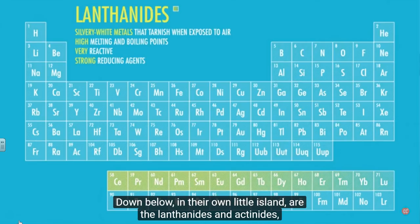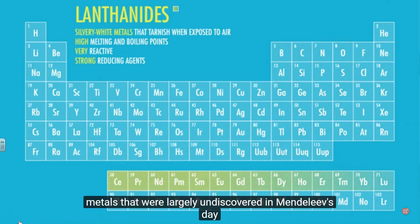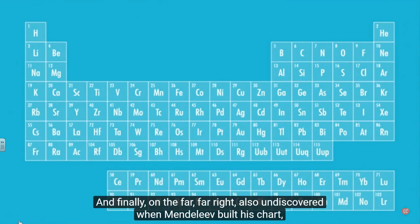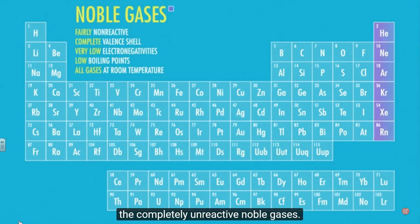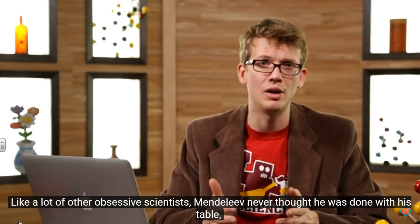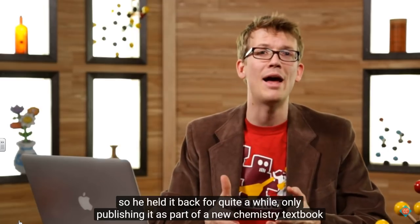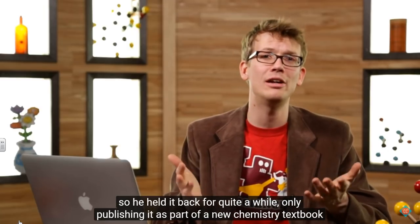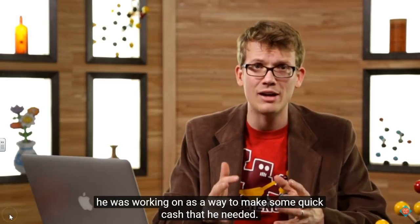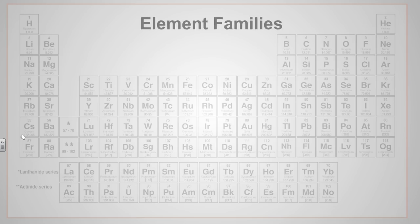Down below in their own little island are the lanthanides and actinides, metals that were largely undiscovered in Mendeleev's day because they're so similar that it's next to impossible to separate them from each other. And finally, on the far, far right, also undiscovered when Mendeleev built his chart, the completely unreactive noble gases. Like a lot of other obsessive scientists, Mendeleev never thought he was done with his table, so he held it back for quite a while, only publishing it as part of a new chemistry textbook he was working on as a way to make some quick cash that he needed.